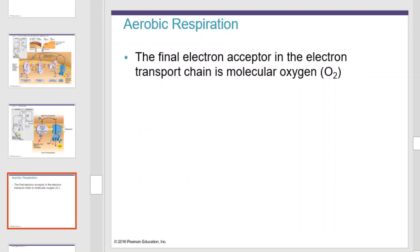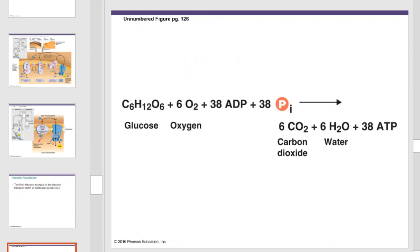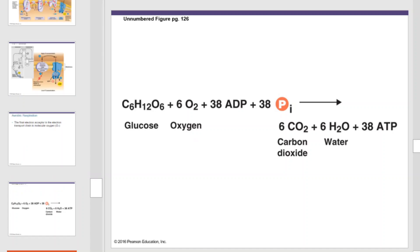The final electron acceptor in aerobic respiration is molecular oxygen, which is why aerobic organisms require oxygen. Each NAD can be oxidized in the electron transport chain to produce three molecules of ATP. Each FAD can produce two molecules of ATP.